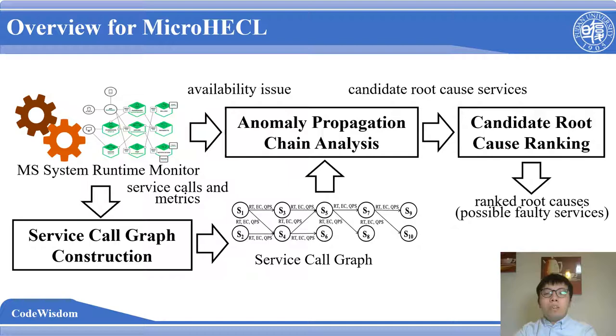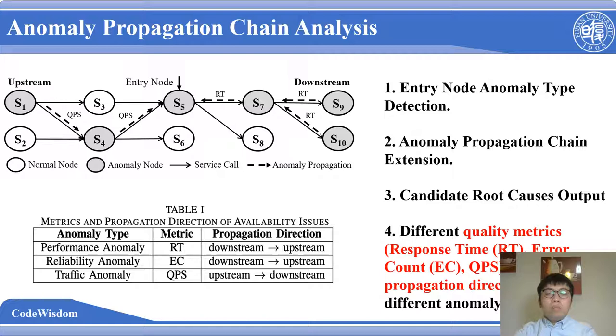The core of our approach is the analysis of the anomaly propagation chain. An availability issue is initially observed on a service, as shown in the graph, but the root cause often lies in some of its downstream or upstream services. So we first detect the service anomaly type of the entry node. Then we iteratively extend the anomaly propagation chain by backtracking along the anomaly propagation direction from the starting point. Finally, when all the anomaly propagation chain analysis is finished, we report all the services as candidate root cause services.